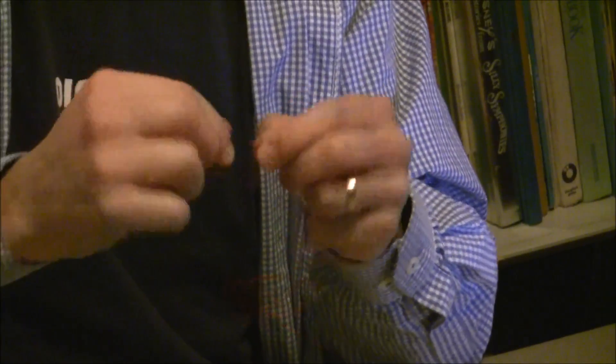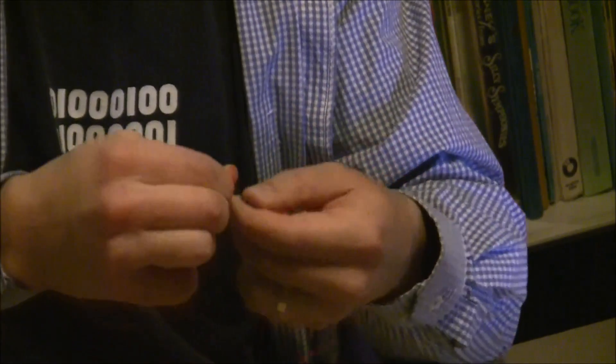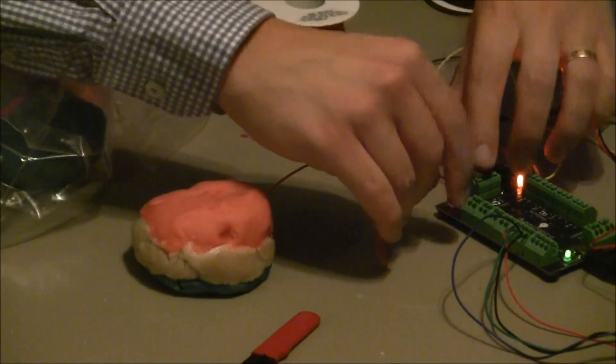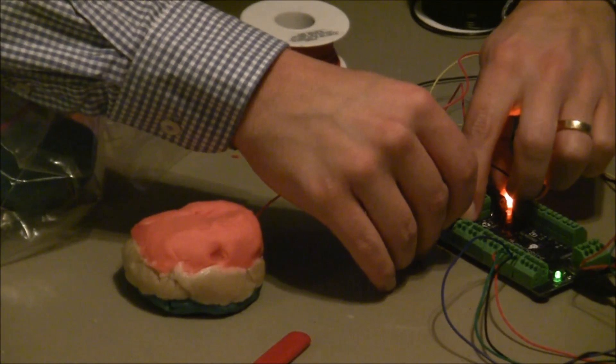Since this is stranded wire, I'm braiding it together. And then I will stick it in. This side I will put into the positive terminal of LED port 1.